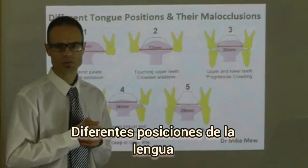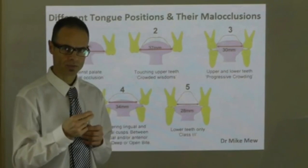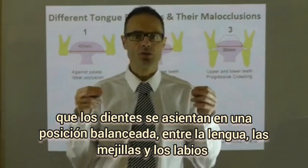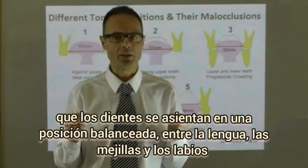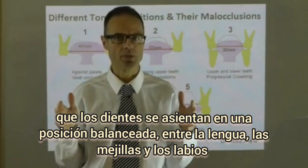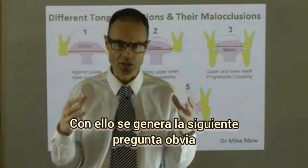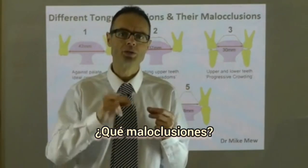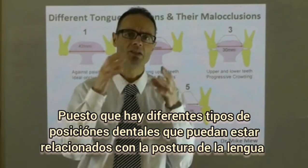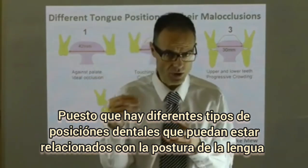Different tongue positions and their malocclusions. It's well known within dentistry that the teeth sit in a balanced position between the tongue and the cheeks and lips, which draws the obvious next question: what malocclusions — what various different teeth positions — can be related to tongue positions?